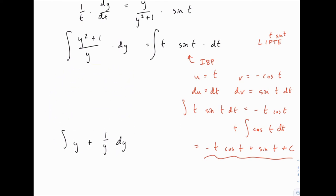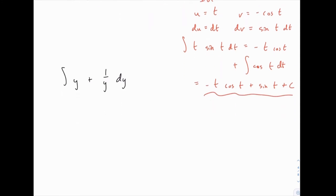So now we know that this left side once we integrate it will equal negative t cosine t sine t plus c. So we can integrate the left hand side more easily. The integral of y is one half y squared. The integral of one over y is the natural log of y and that all equals what we found for the right side.